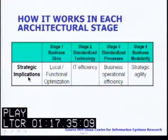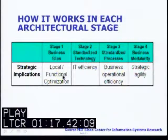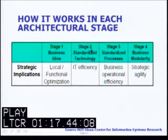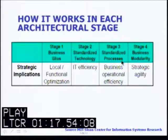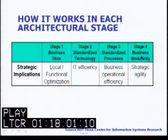Finally, the strategic implications: stage one, business silos, is local and functional optimization; stage two, standardized technology, focuses on IT efficiency; stage three, standardized processes, focuses on business operational efficiency; and stage four, business modularity, focuses on strategic agility.